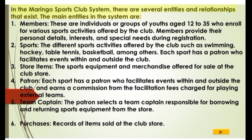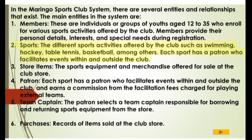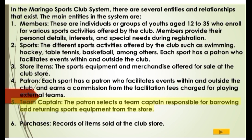The main entities in the system are: 1. Members — individuals or groups of youths aged 12 to 35 who enroll for various sports activities offered by the club. Members provide their personal details, interests, and special needs during registration. 2. Sports — the different sports activities offered by the club such as swimming, hockey, table tennis, basketball, among others. Each sport has a patron who facilitates events within and outside the club. 3. Store Items — the sports equipment and merchandise offered for sale at the club store. 4. Patron — each sport has a patron who facilitates events within and outside the club, and earns a commission from the facilitation fees charged for playing external teams. 5. Team Captain — the patron selects a team captain responsible for borrowing and returning sports equipment from the store. 6. Purchases — records of items sold at the club store.